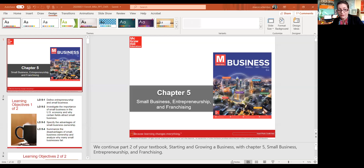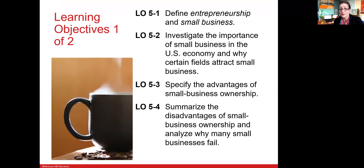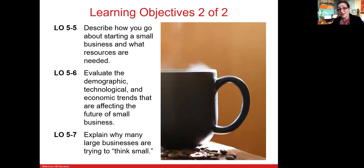We're just going to share the screen here. The chapter is titled Small Business, Entrepreneurship and Franchising. The learning objectives look at definitions for entrepreneurship and small business and the importance of small business in the American economy. We look at the advantages and disadvantages of small business ownership, how to start a small business, demographic, technological and economic trends, and why many large businesses are trying to think small.